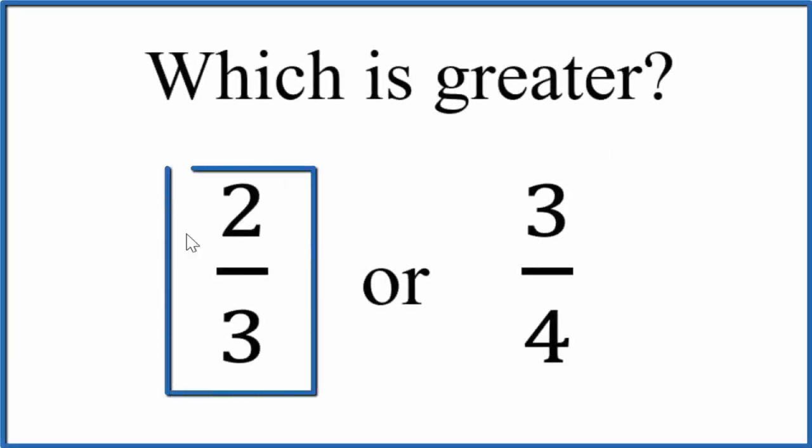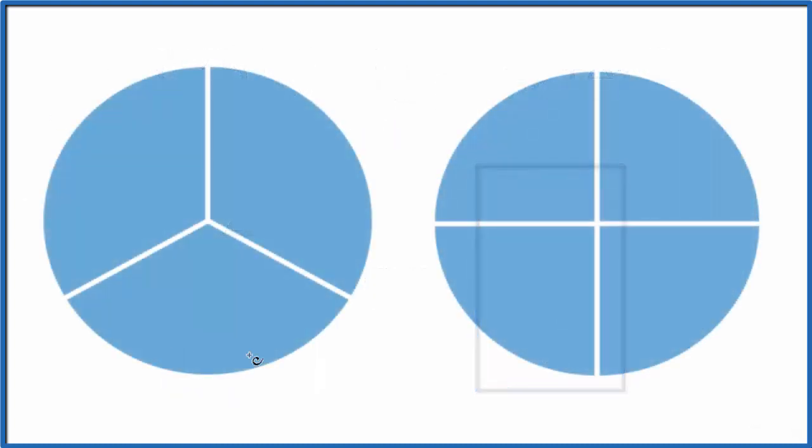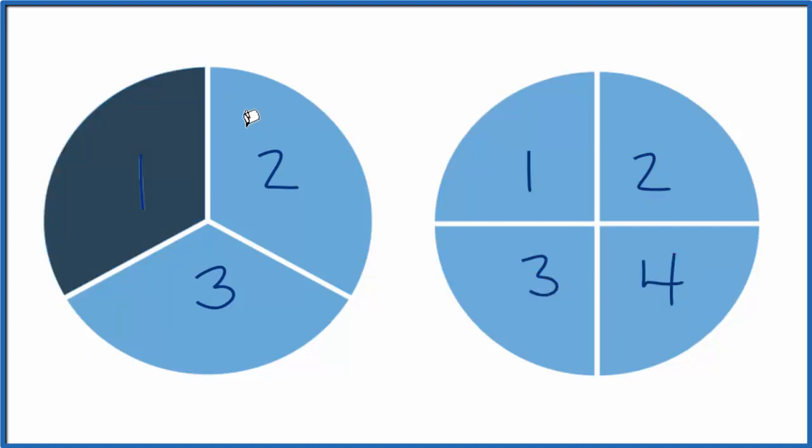Which is greater, two-thirds or three-fourths? We have the circle here divided into one, two, three parts. Over here we have one, two, three, four. For two-thirds, we'll color two of these in. That's two-thirds of the circle.